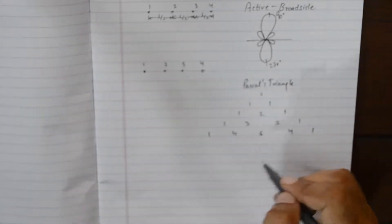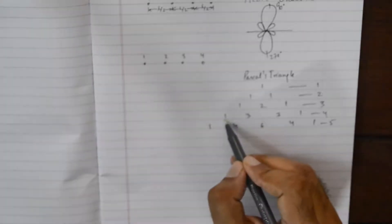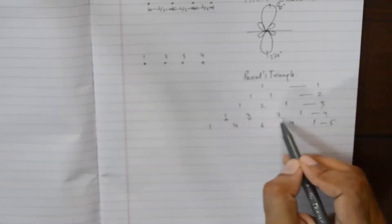So we can go on to make a Pascal's triangle. This is one element, this is two elements, this is three elements, this is four and this is five. If you want to make a four element binomial array, we need to distribute the energies or the power supplies to the active elements in this proportion.